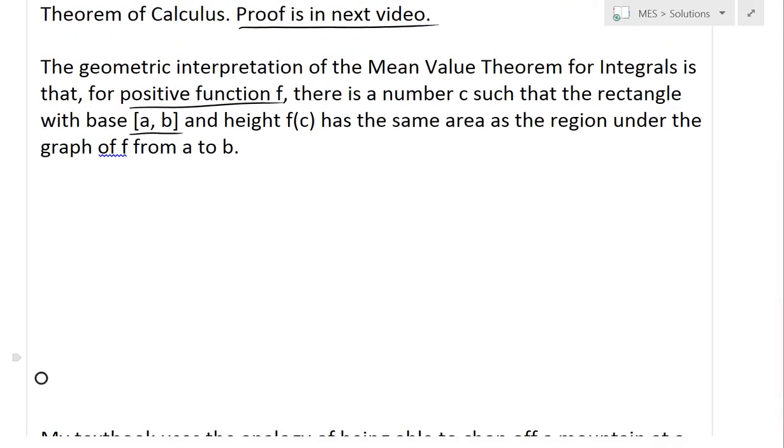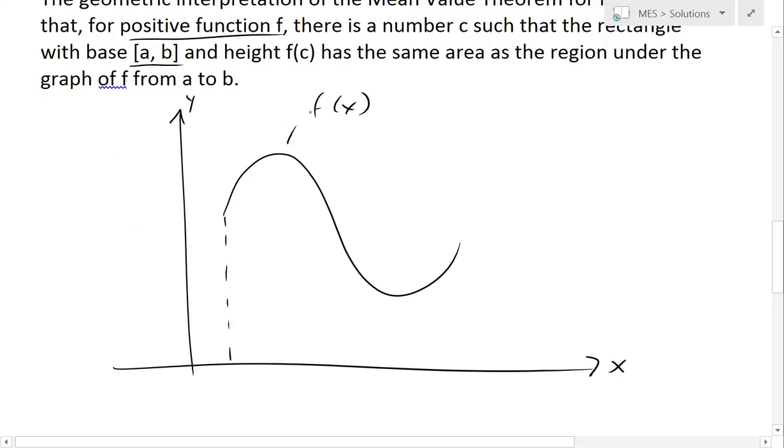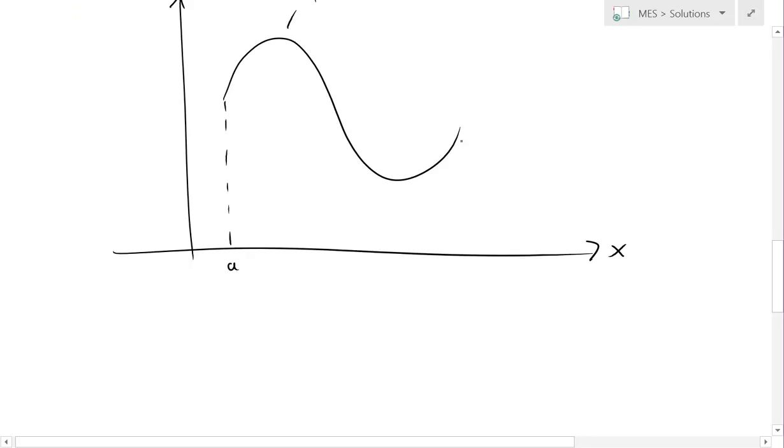For example, I'll just draw this out. So if we have a function like this, this is x, this is y. So let's say it's something like this. So basically, if this is your function, this is f(x), and this is from a to b.